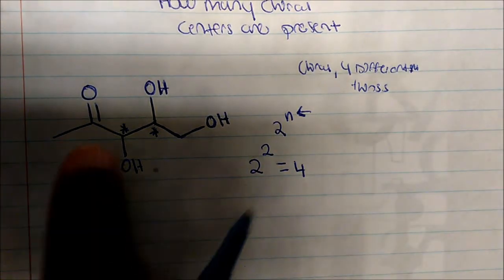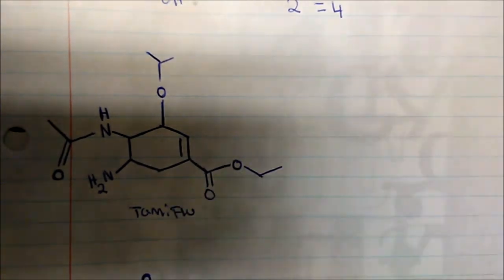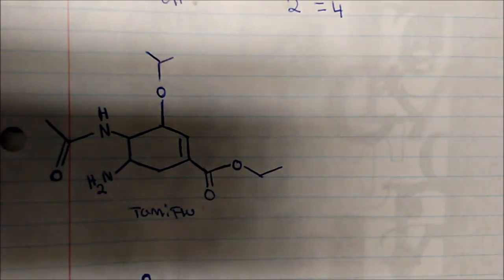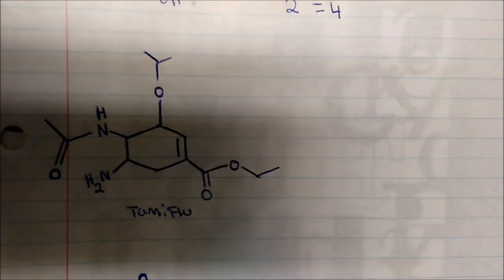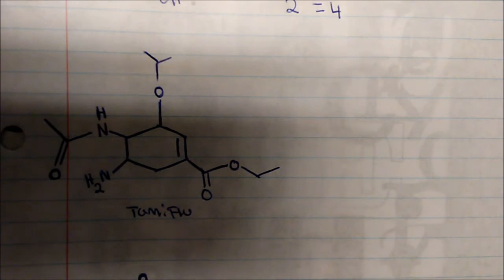In this case, 2^2 equals four, so we could draw four stereoisomers of this compound. Now for the next example — this is Tamiflu, an antiviral drug. This is what you're actually putting in your body. How many chiral centers are present?